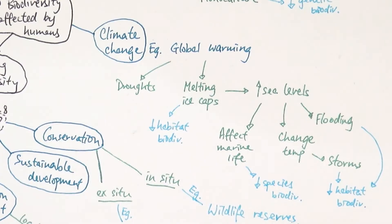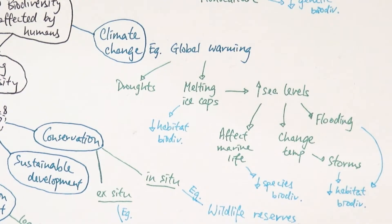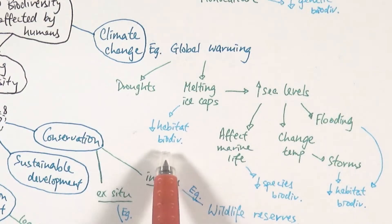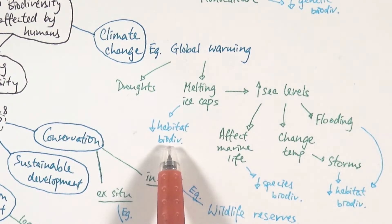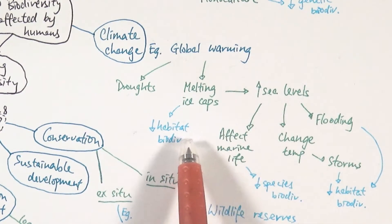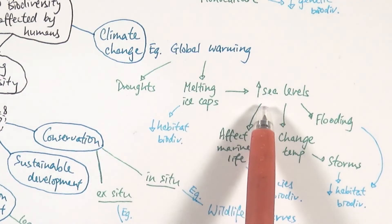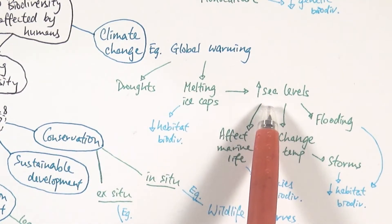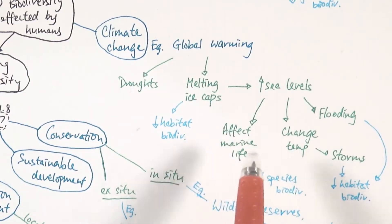The third point is climate change, illustrated most obviously by global warming — the general increase in global temperature. This can lead to droughts, causing lack of water so plants can't grow and species die out. Temperature increases also lead to the melting of ice caps, decreasing habitat biodiversity — for example, polar bears no longer have ice caps to live on, leading to their extinction or endangerment. Melting ice caps also raise sea levels, which can have several knock-on effects.